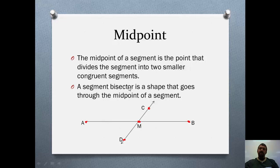A segment bisector is any shape that goes through the midpoint. It's also any shape that divides the segment exactly into two congruent segments. It goes right through the middle of a segment. So segment AB is bisected by line CD. That's because line CD here goes through point M, the midpoint of segment AB.